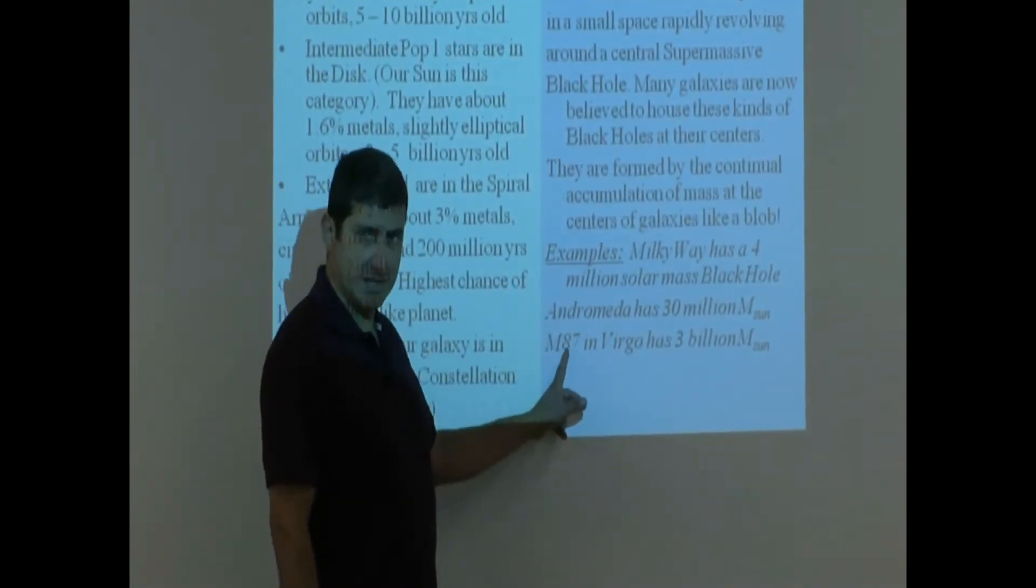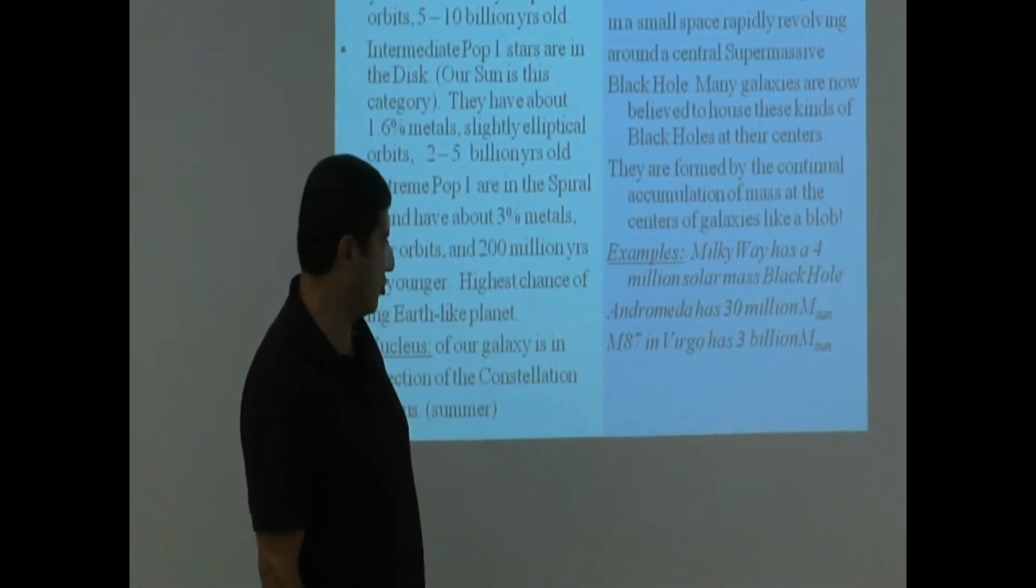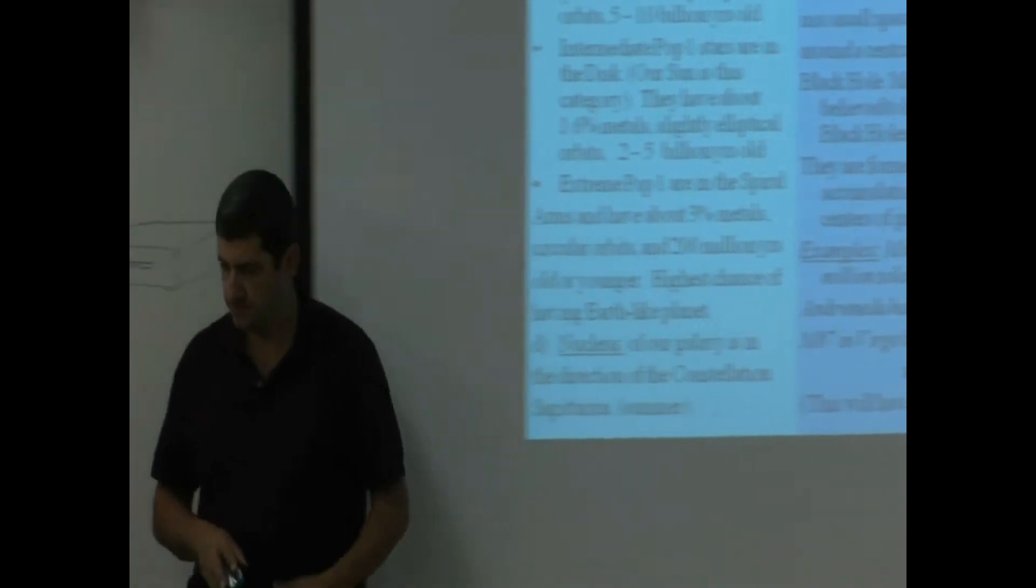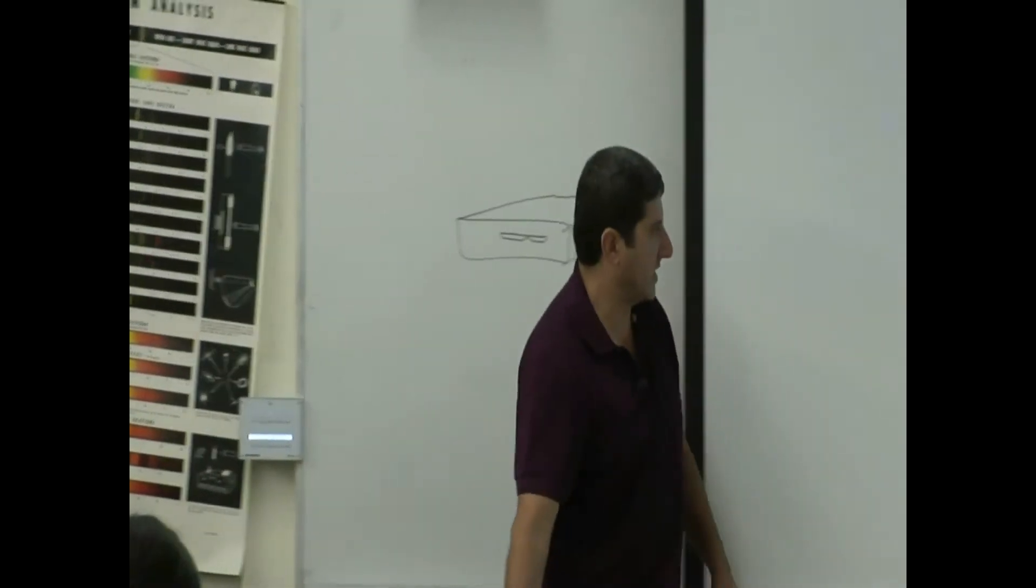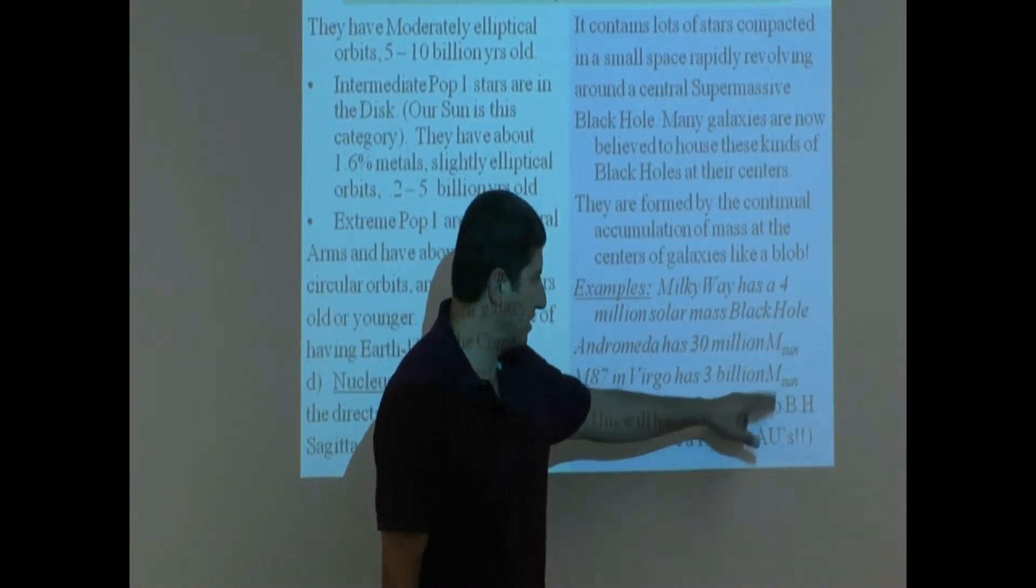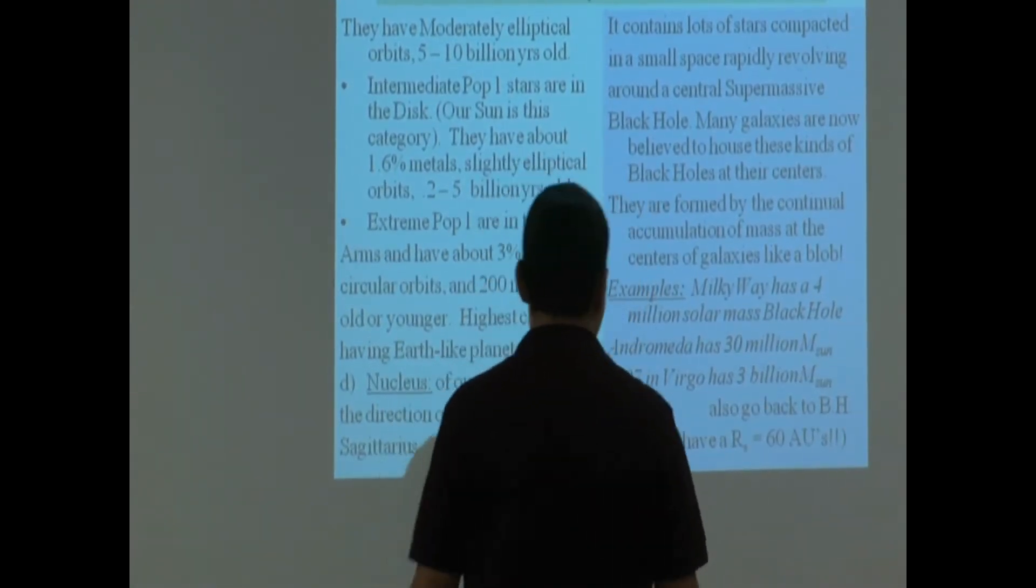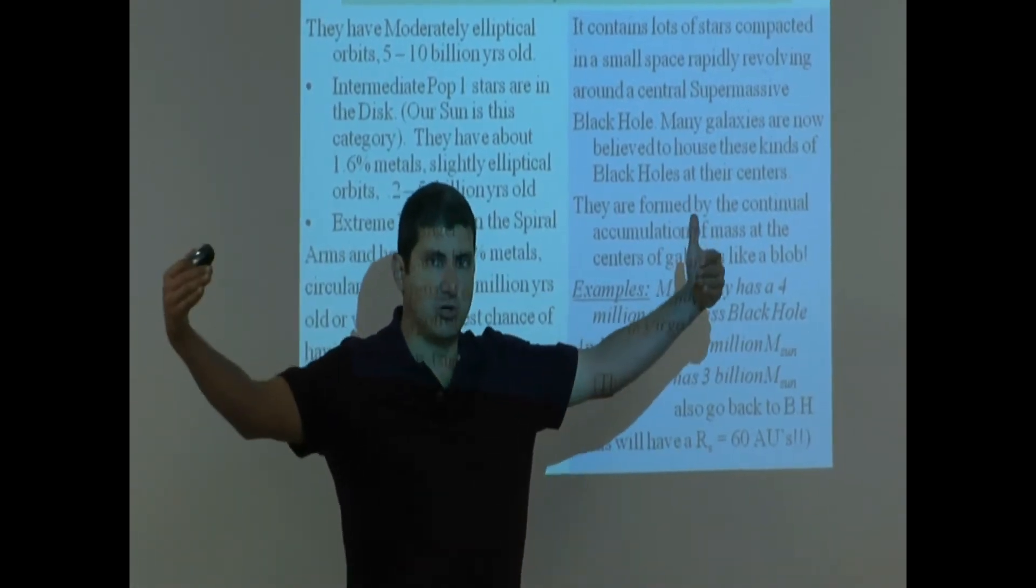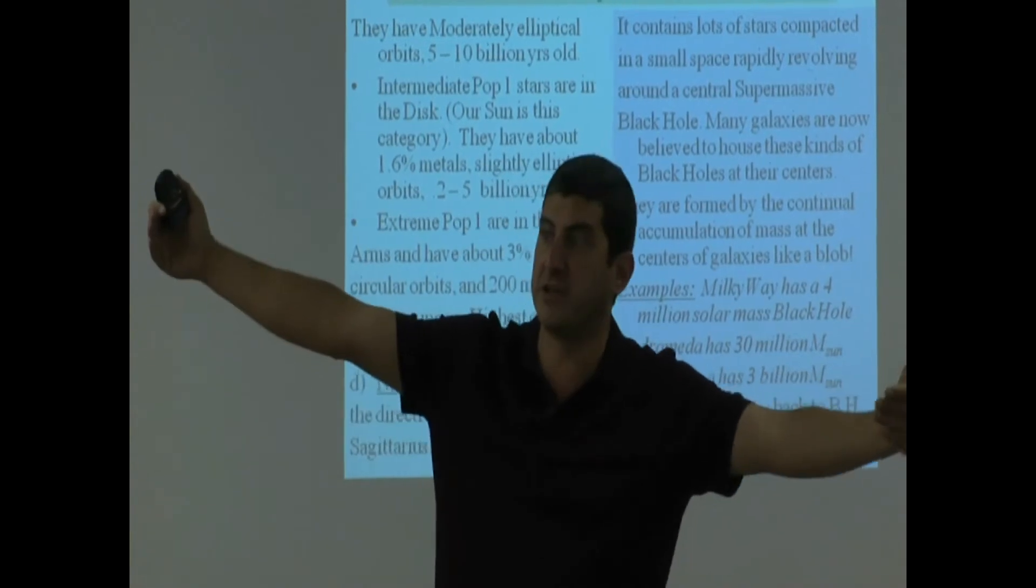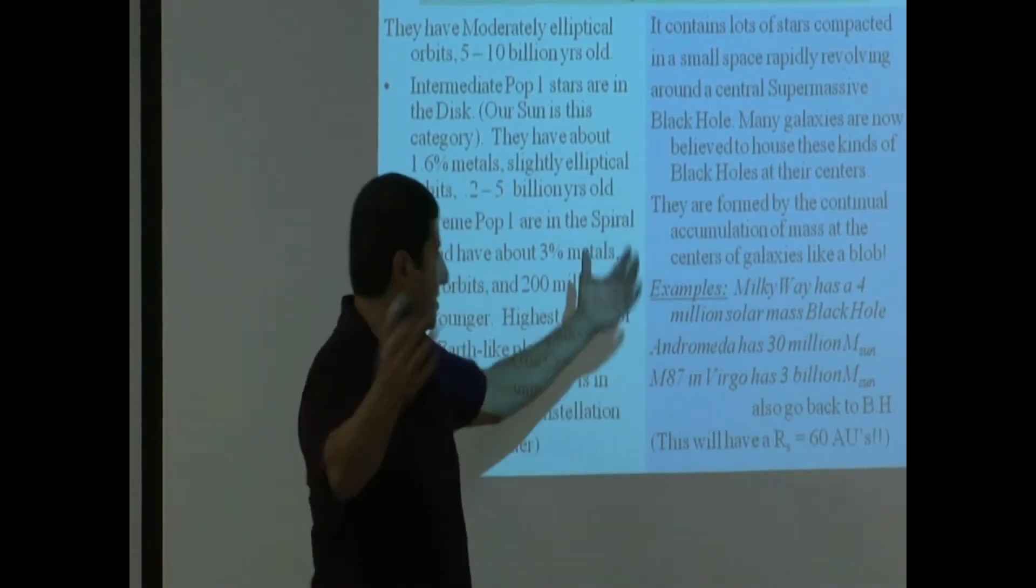M87 is a galaxy in the supercluster Virgo, and it has a 3 billion solar mass black hole. What I did here is I calculated, I did a rough calculation. This black hole in Virgo, which is 3 billion solar masses, I estimated what its Schwarzschild radius would be, and it came out to be 60 AUs. That means the size of that black hole would eat anything within 60 AU from the center. Well, that's bigger than our solar system, farther away than Pluto is from the sun. Anything within 60 AUs, it just gobs it down and keeps getting bigger.